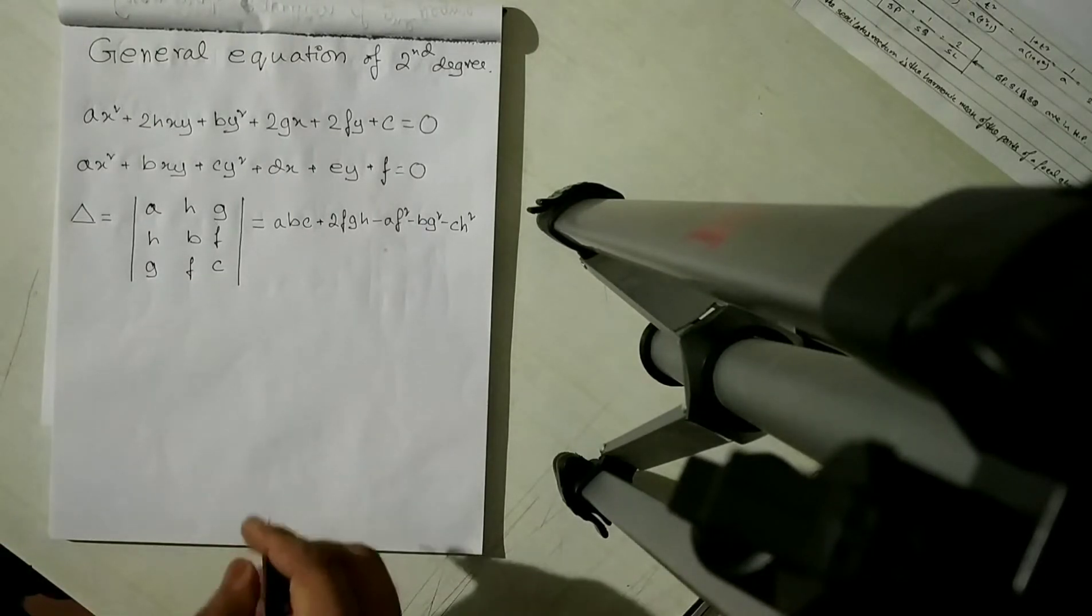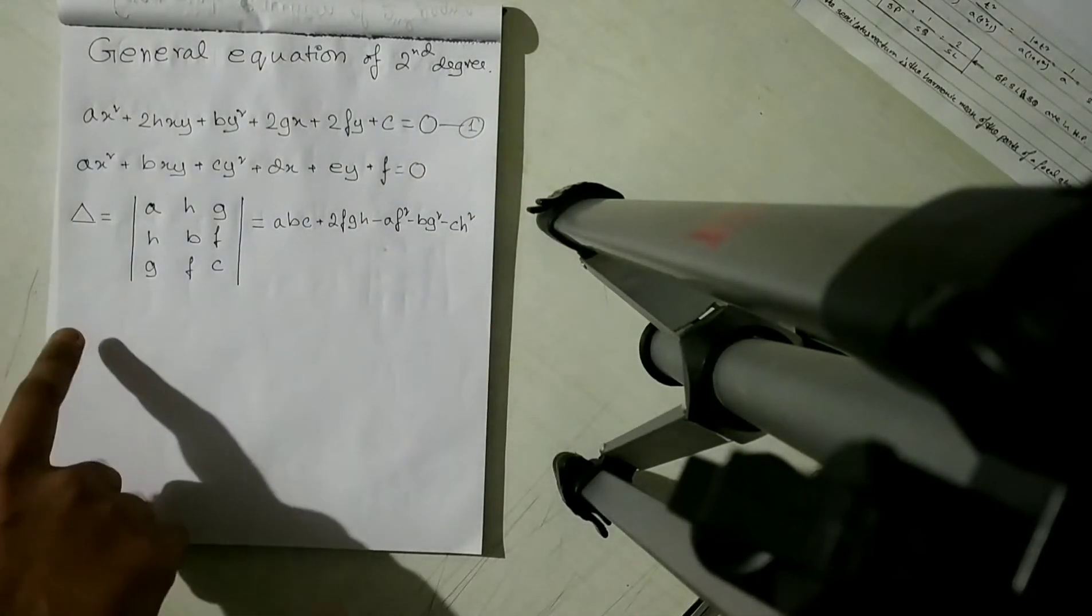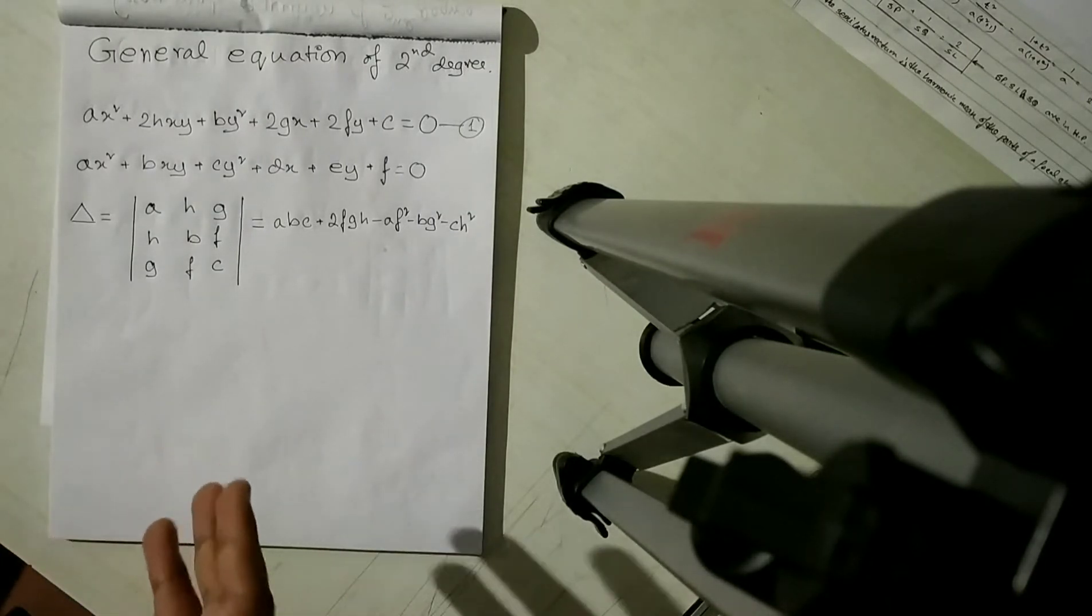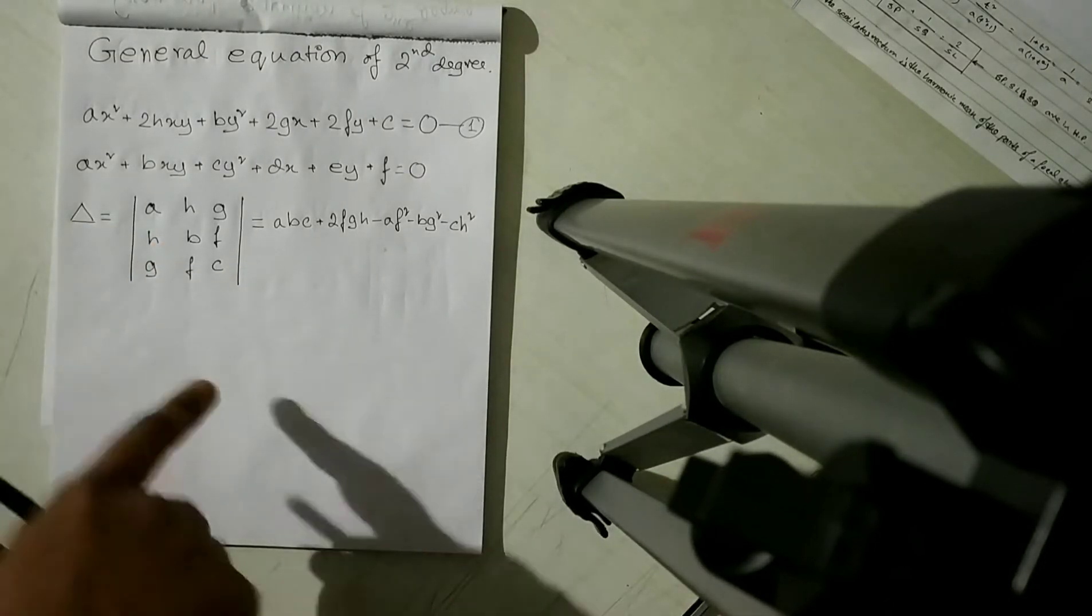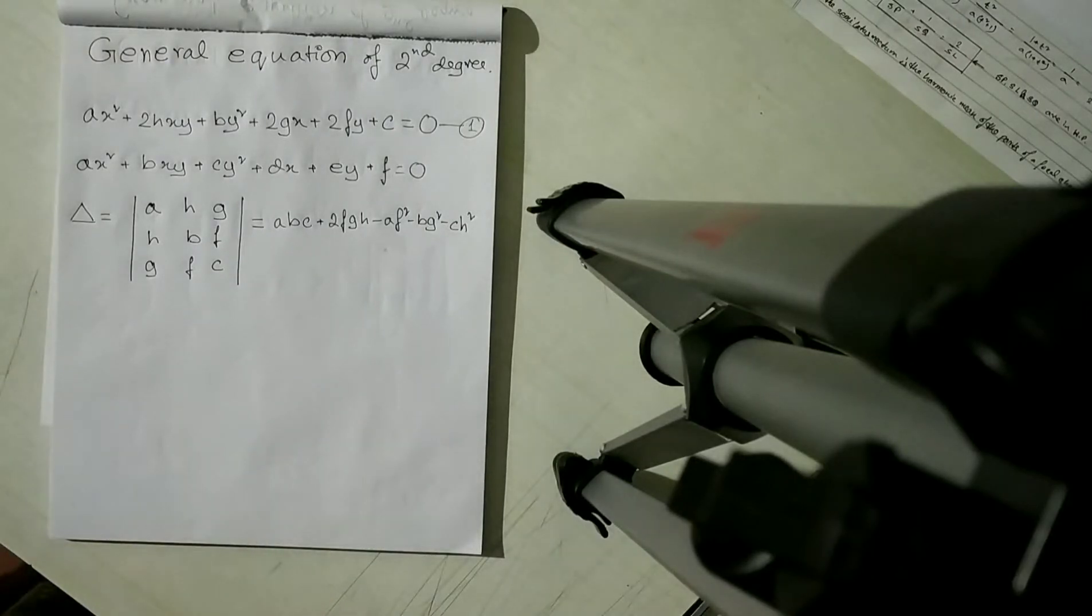You can clearly understand that I am using the first equation. Now, this Delta does not signify area. It is a derived equation which can be explained with the help of the determinant of a symmetric matrix. Now, this equation here is very important because we can actually understand if the equation of a given curve is a conic, or does it denote a pair of straight lines. So this is how we are going to do it.